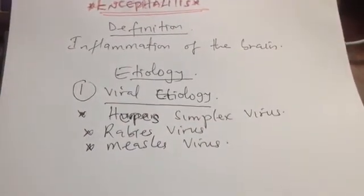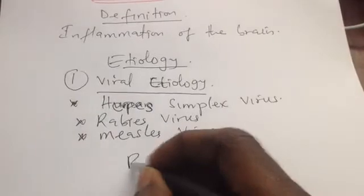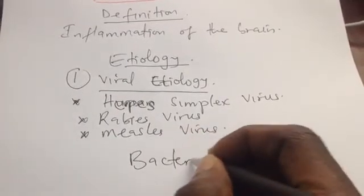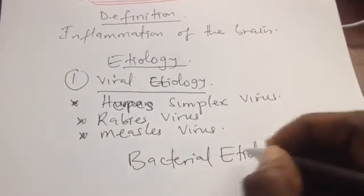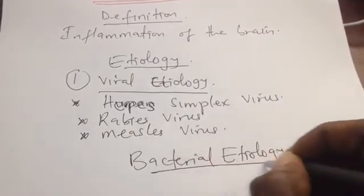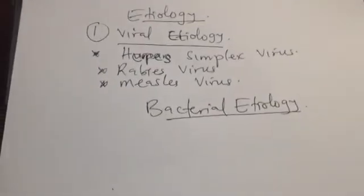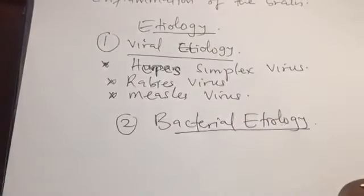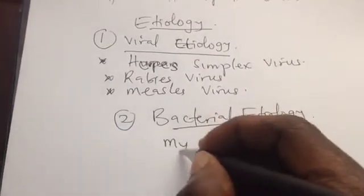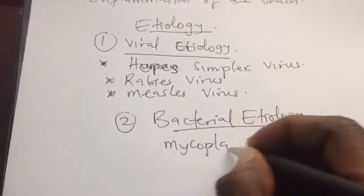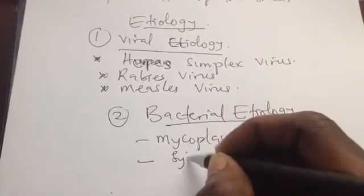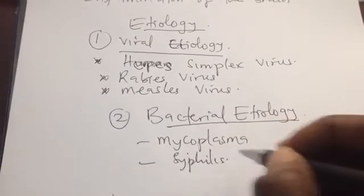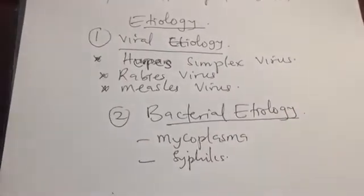The second etiology is bacterial. Bacterial causes of encephalitis occur on rare occasions. Examples include Mycoplasma, which can sometimes cause encephalitis, and syphilis — specifically tertiary syphilis — if it involves the central nervous system.